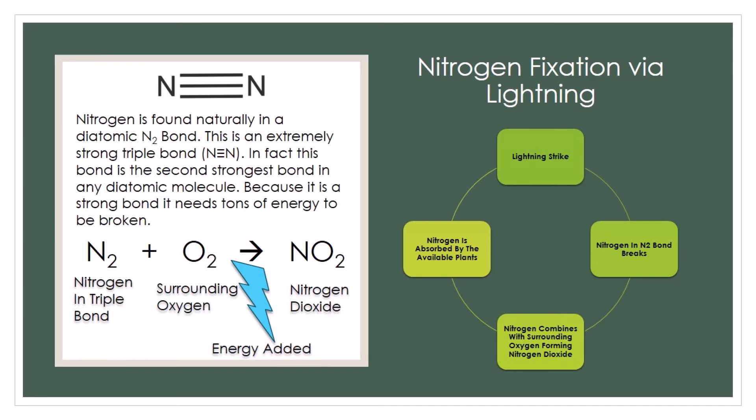Once it is in this state, the nitrogen is in one of a few plant usable forms. This process is called nitrogen fixation via lightning.